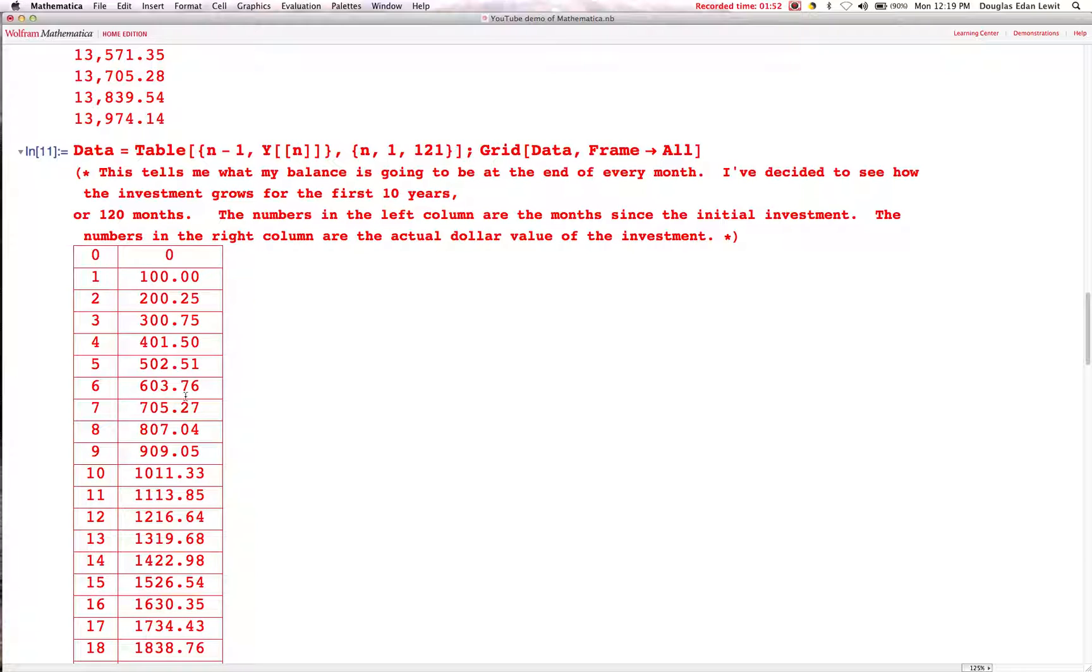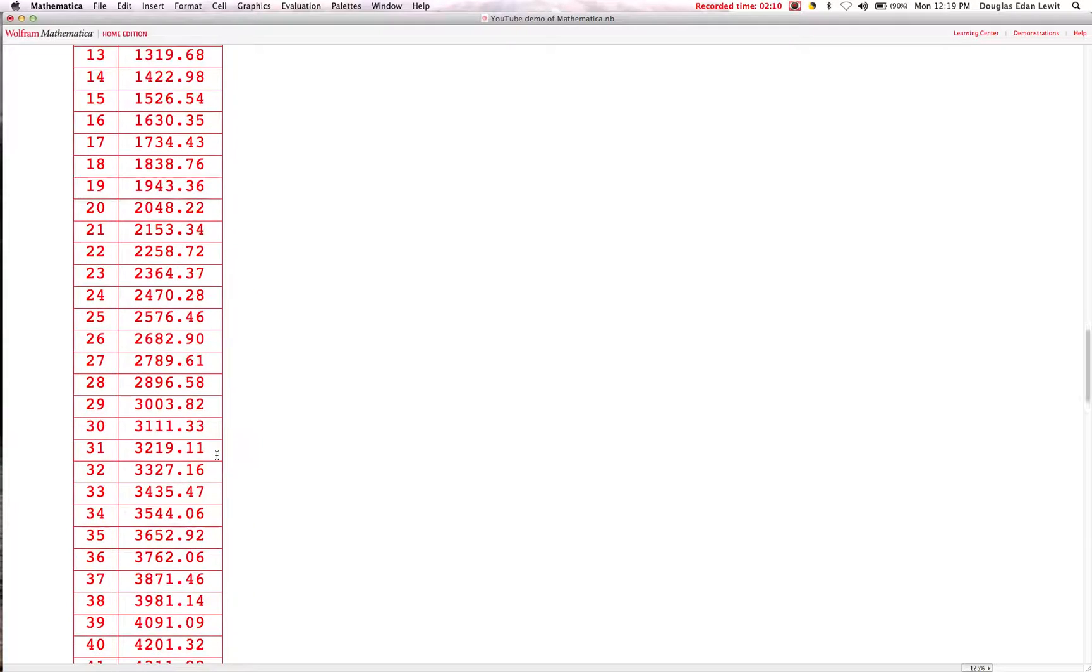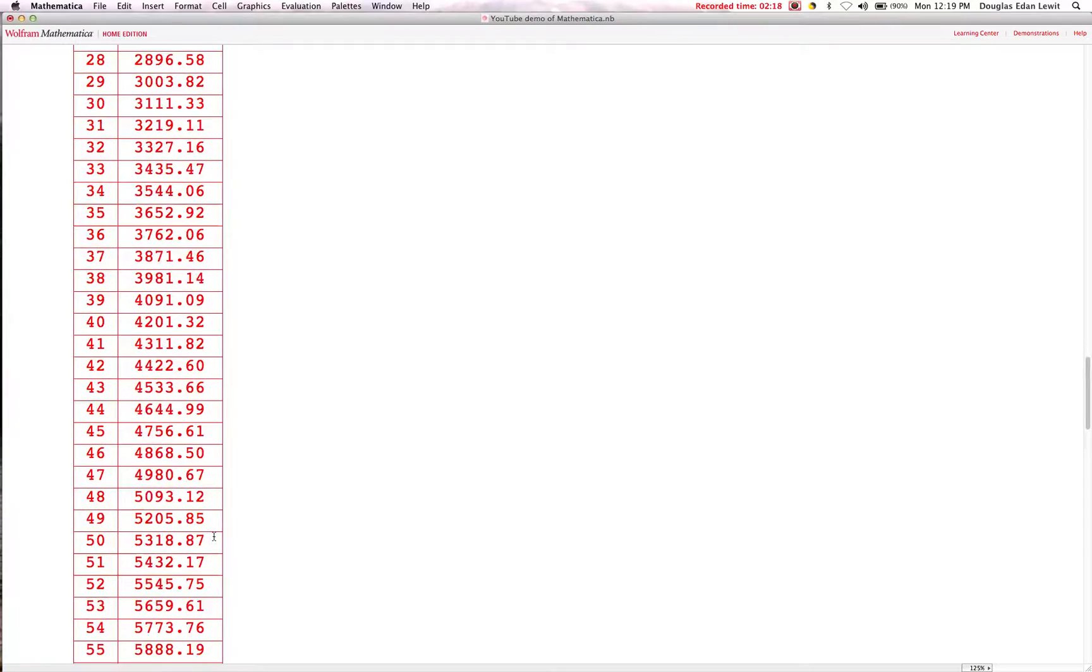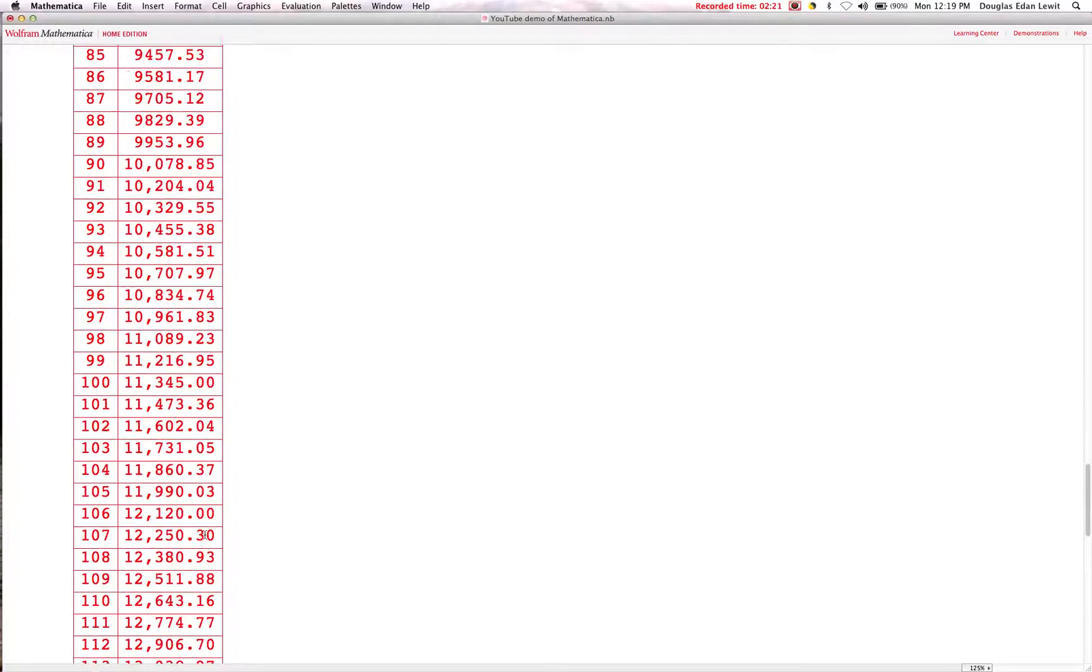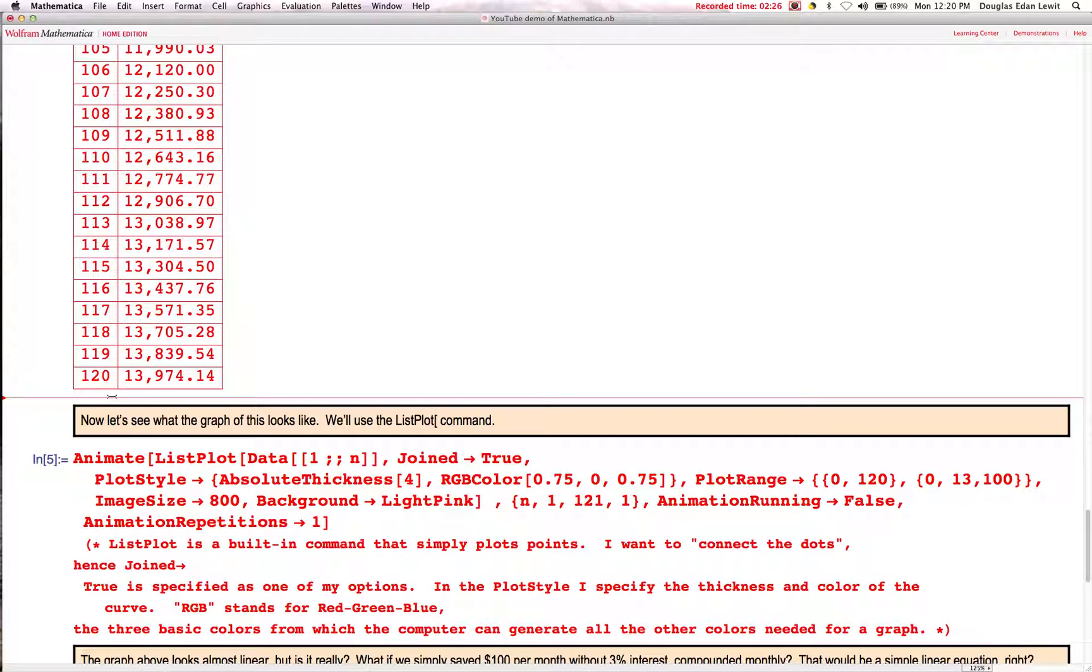The numbers on the right show the balance. So once again, the left column contains the number of months. The right column contains my balance. For example, after 20 months, my balance is $2,048.22. Let's scroll down. After 46 months, my balance is $4,868.50. And finally, at the end, after 10 years, the number of months is 120 months, and my balance is $13,974.14.